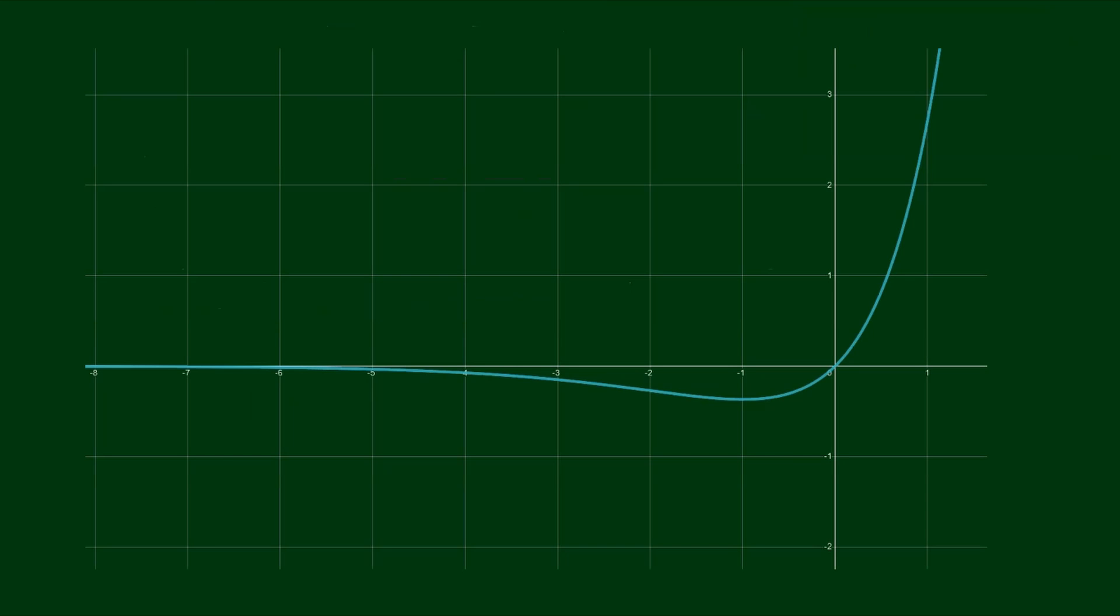Now for some visual confirmation of this result, let's have a look at the graph. So this curve is the function f is equal to x by e to the power of x. And as you can see, as we go along towards larger negative values of x, so as x approaches negative infinity, we see that the curve does, indeed, approach 0.